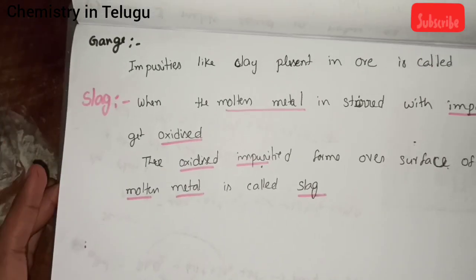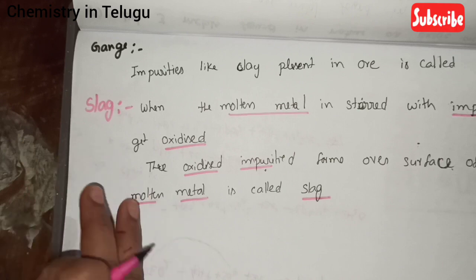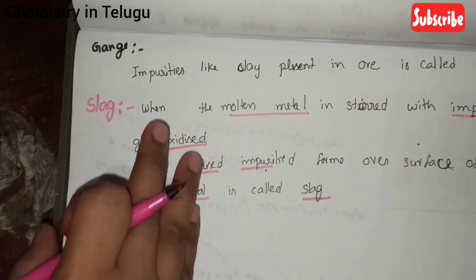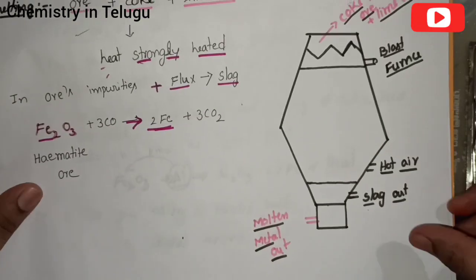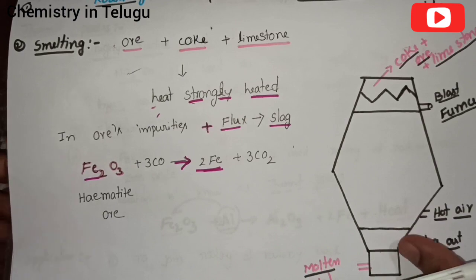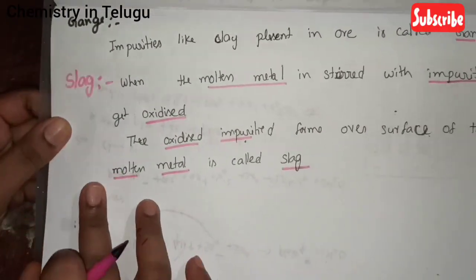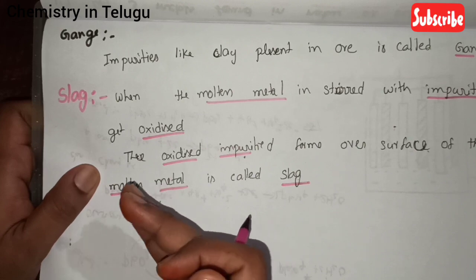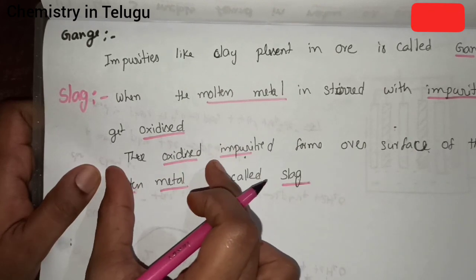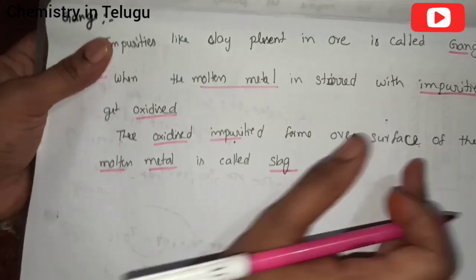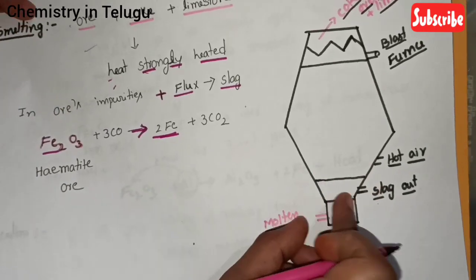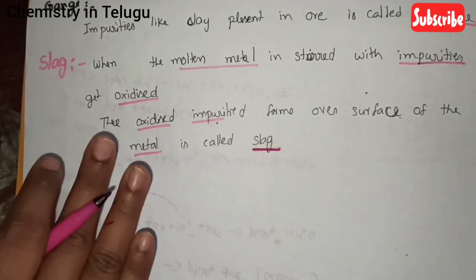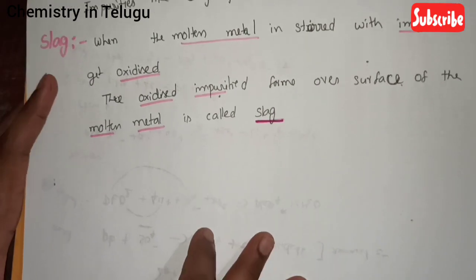Gangue refers to impurities — unwanted materials such as clay present in the ore. In the smelting process, the molten metal is mixed with impurities. These impurities get oxidized, and the oxidized impurities form over the surface as slag. This covers the most important points of the principles of metallurgy chapter.